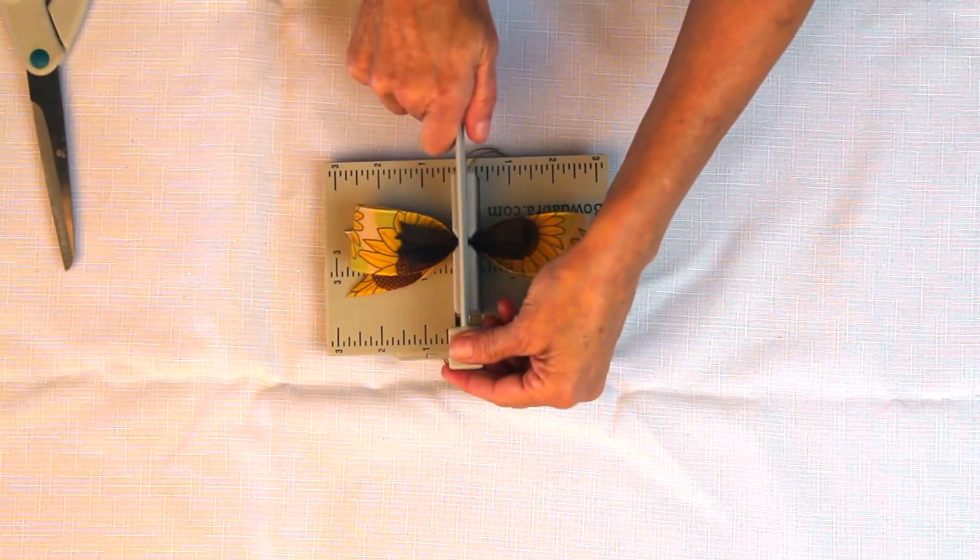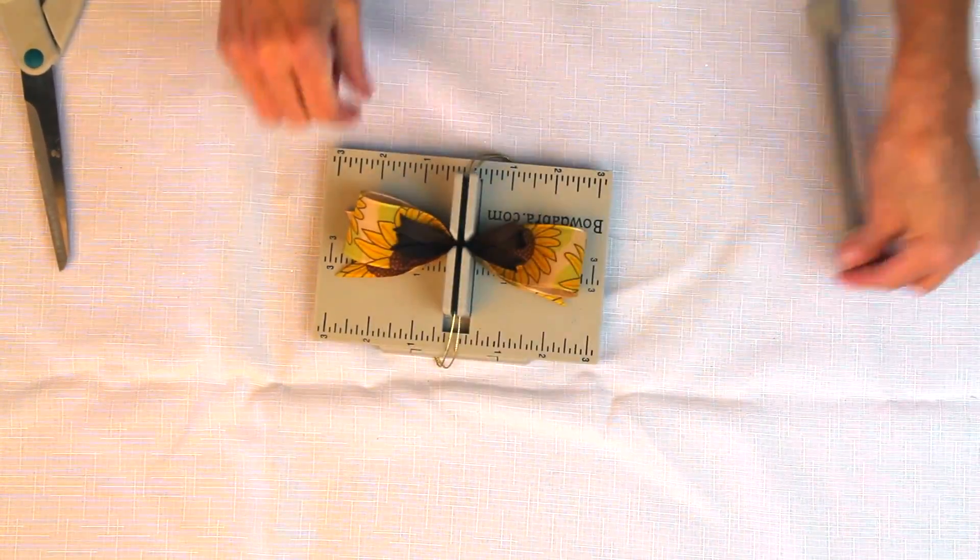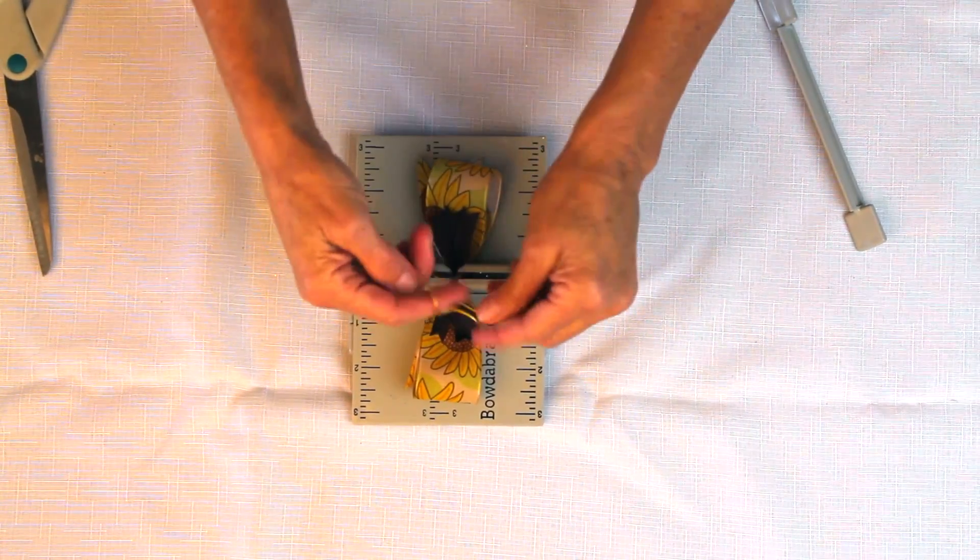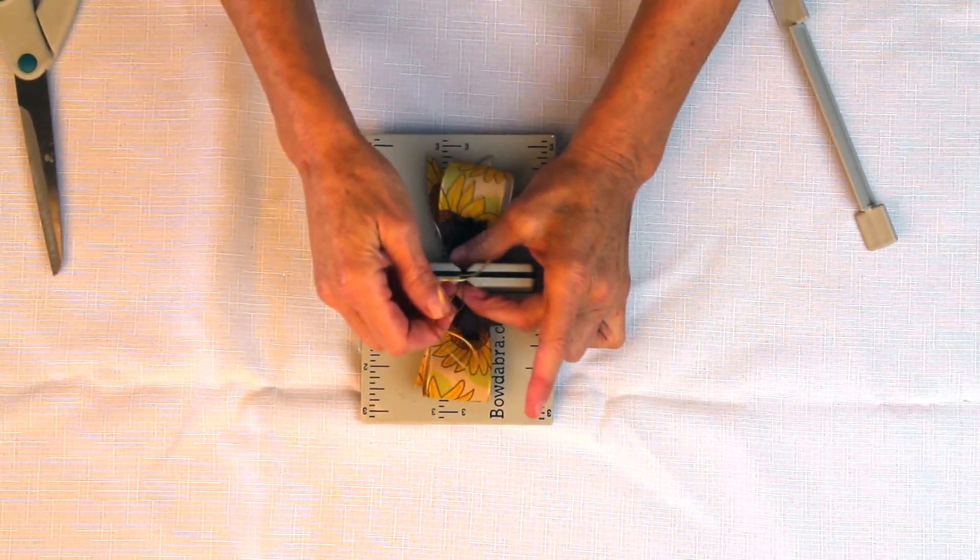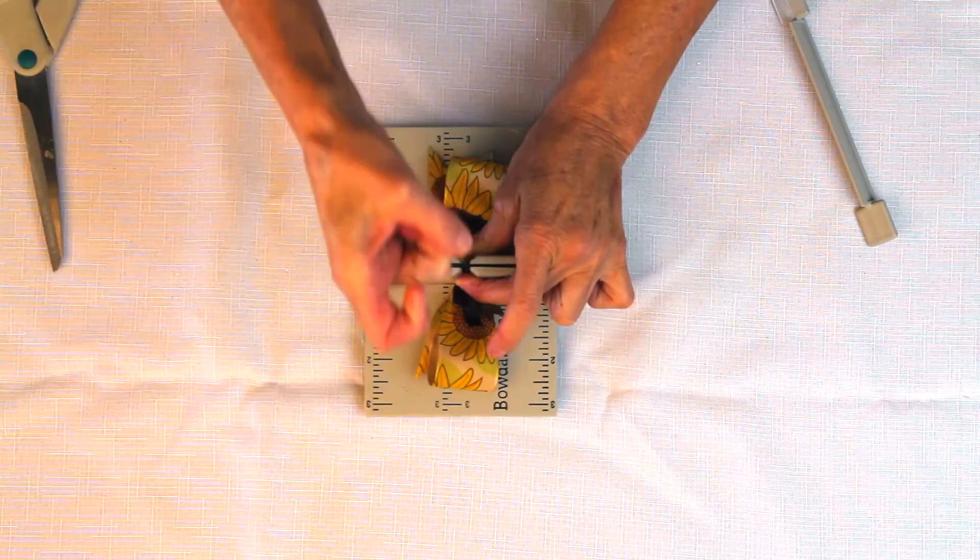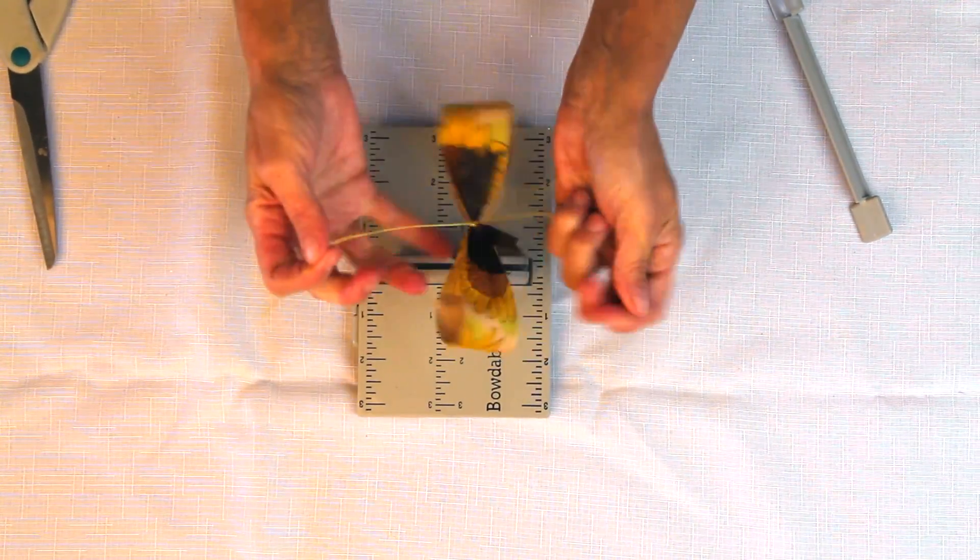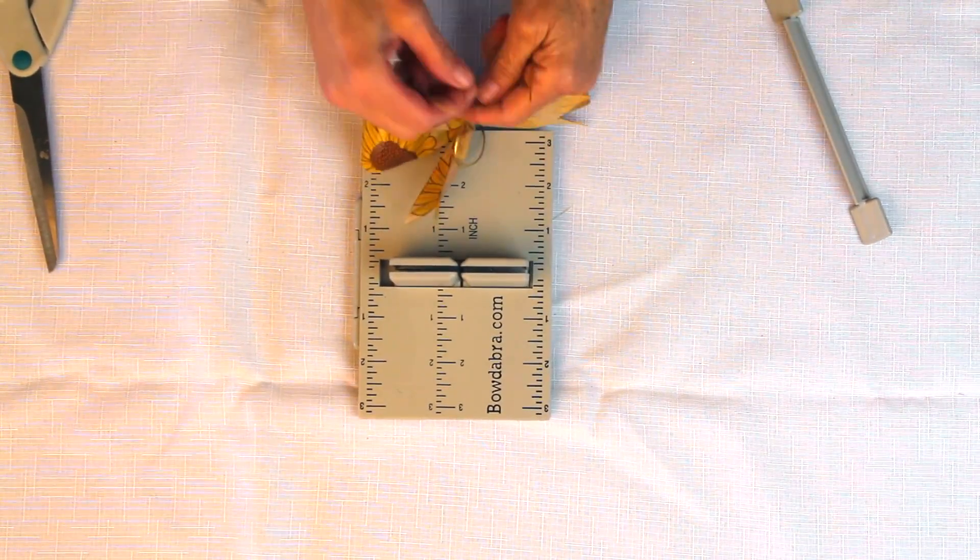So the next thing I'll do is just scrunch everything down with my mini Bowdabra wand. I'm going to take my Bowdabra bow wire, pull it here, pull it tight while it's still in the Bowdabra, separate my ends, bring it around to the back and tie it off.